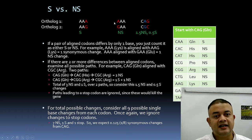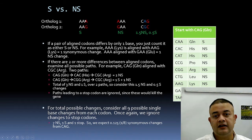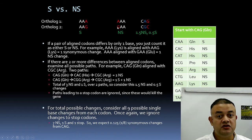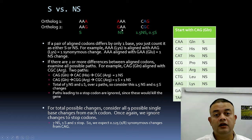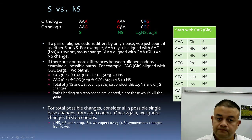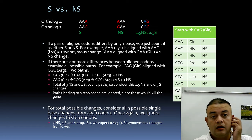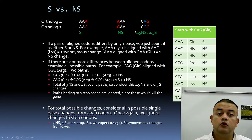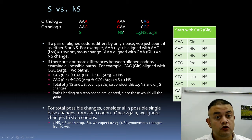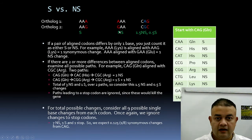Now for the second codon: AAA changes to GAA — A changes to G. AAA codes for lysine; GAA codes for glutamic acid (glutamate). So this is a non-synonymous mutation — the amino acid is changing. The first example is synonymous, this one is non-synonymous. Clear up to the second codon position.